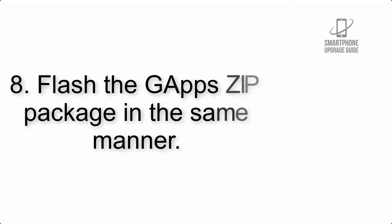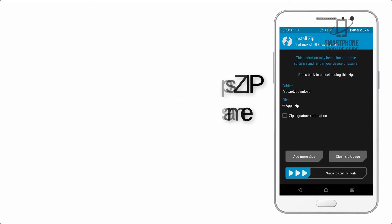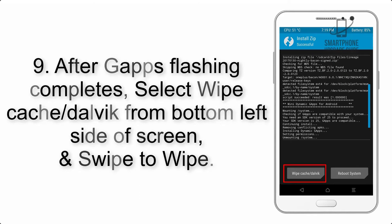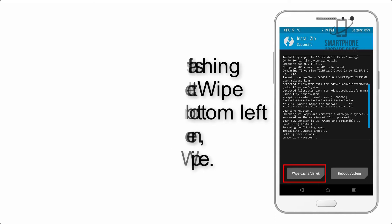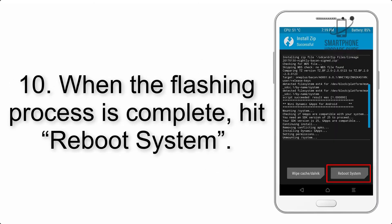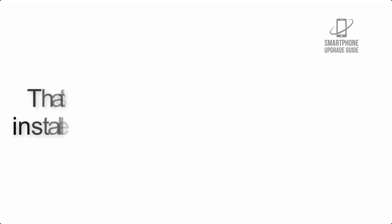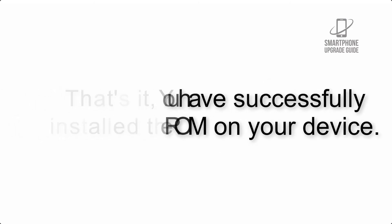Step 8: Flash the GApps zip package in the same manner. Step 9: After GApps flashing completes, select Wipe Cache and Dalvik from the bottom left side of the screen and swipe to wipe. Step 10: When the flashing process is complete, hit Reboot System. That's it — you have successfully installed the ROM on your device.